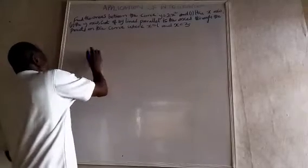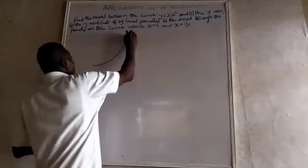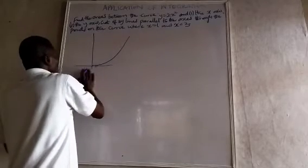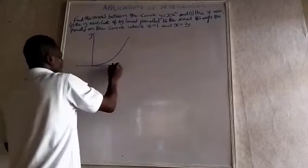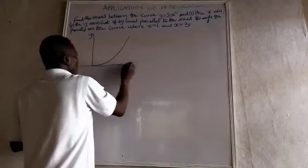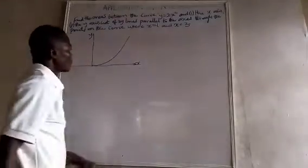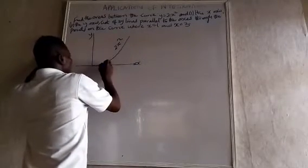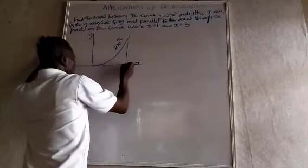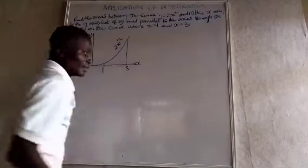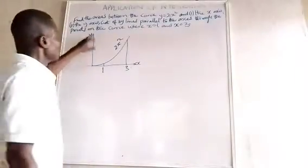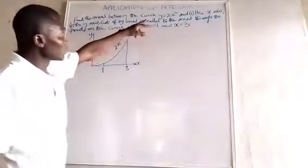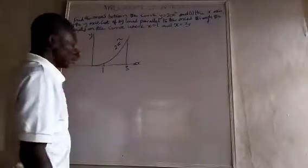The curve is going to be something like this because it's 2x squared. We are at x equals 0, y equals 0. This will be the y-axis and x-axis. This is 2x squared, and we are asked to find the area between x equals 1 and x equals 3. I am showing you this so you can note the difference between the graph and the x-axis and the y-axis.